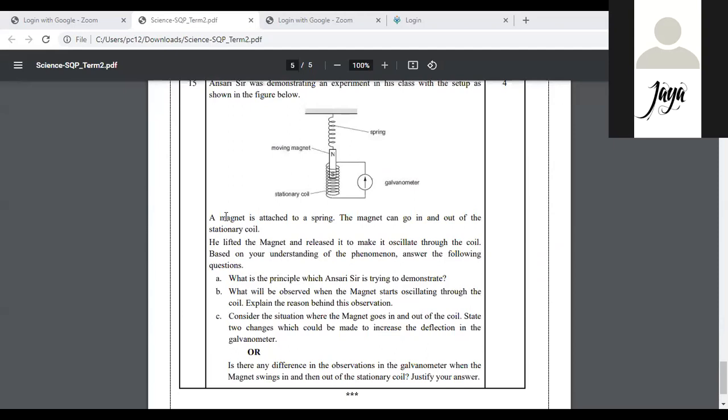So, just one thing for you is that, the magnet is attached to a spring. The magnet can go in and out of the stationary coil. He lifted the magnet and released it to make it oscillate through the coil. Based on your understanding of phenomena, answer the following question. What is the principle which Ansari sir is trying to demonstrate? Yes, on the time. What is the principle? Which principle is it? Which experiment is it? Which experimental setup is there? Faraday's experiment is it? Or principle what is it? EMI? So principle of electromagnetic induction is there. I won't be unmuting you because less time is left. We have to complete this. So EMI and Faraday's experiment.